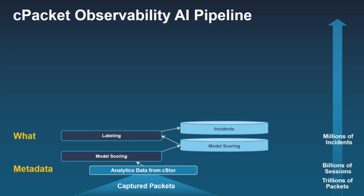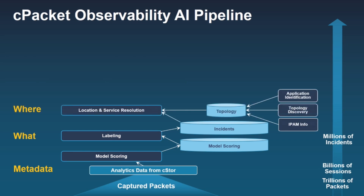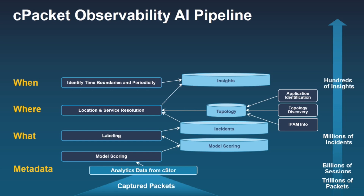Then you start going into the AI. The first thing the AI engine does is identify what we call incidents — for example, cases where we see zero windows, window contraction, or increased latency. But when you deal with incidents, you still end up with millions, because if the server is slow and you have many sessions, the number stays very large. So the next level is correlating them — taking the what, where, and when — to get from millions down to hundreds.